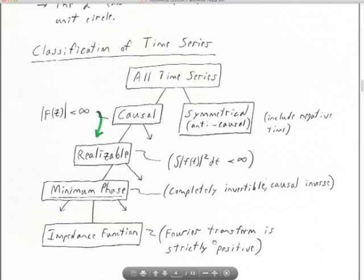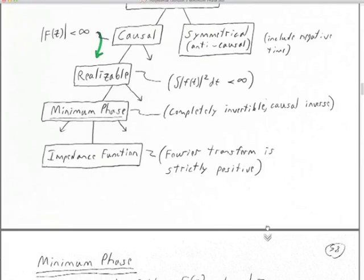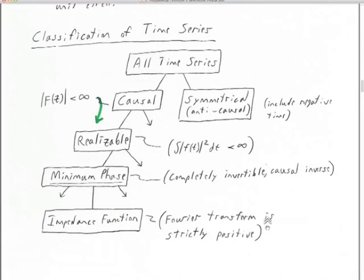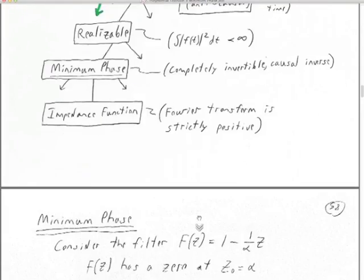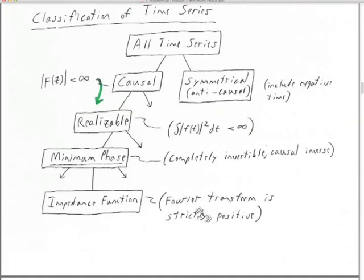We've talked about realizable and causal time series, and I've mentioned impedance functions before. Now we're going to find out this critical link: what is a minimum phase seismogram and what all defines it? I'll go into that tomorrow.